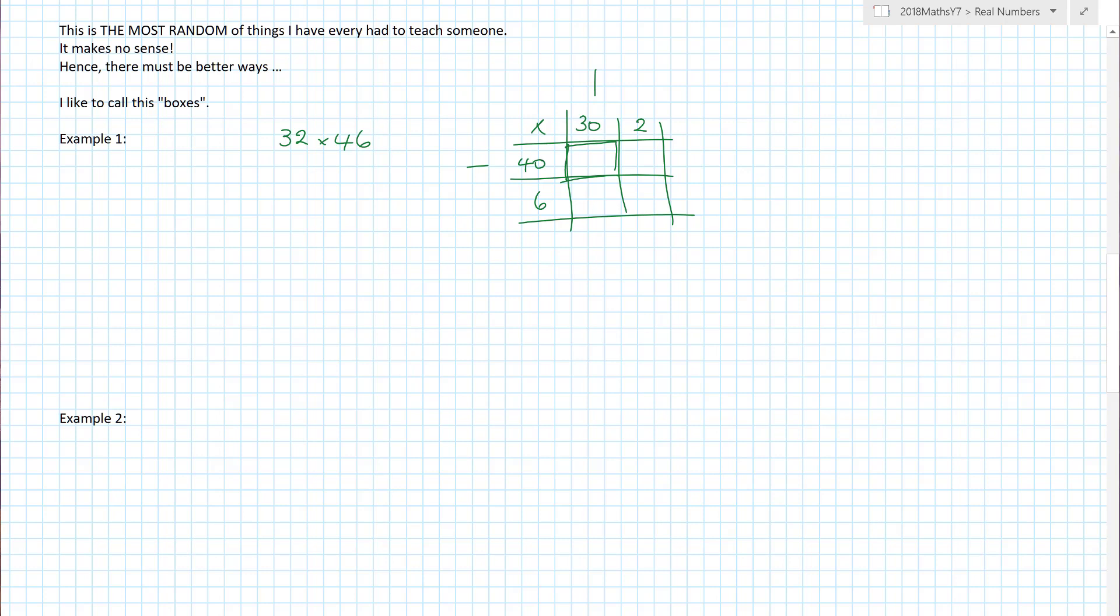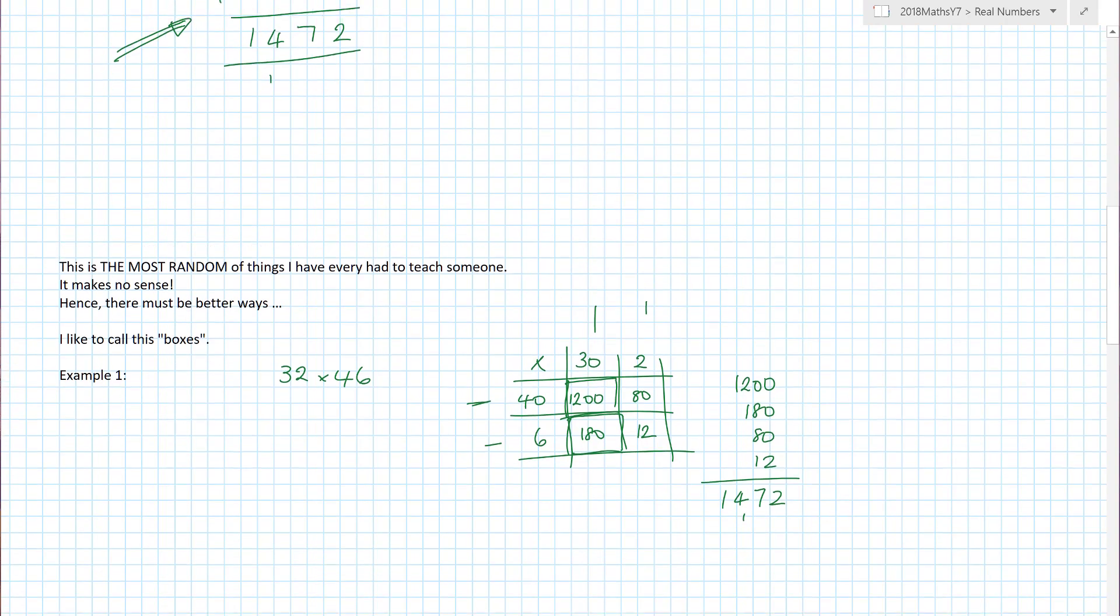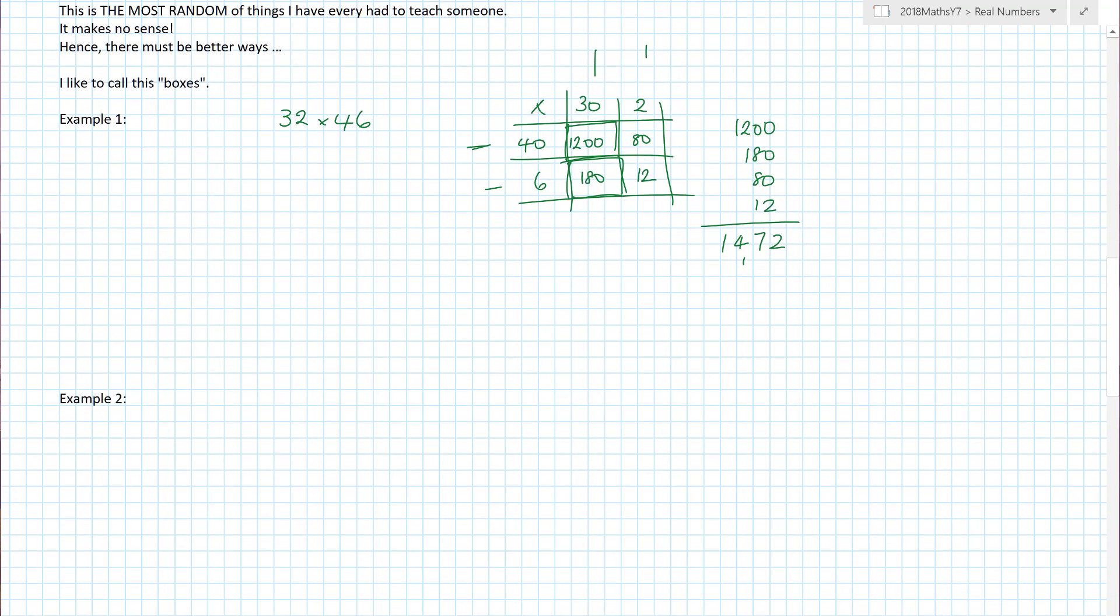So let's do 32 times 46 again. I'm going to draw a grid and I put a little times here. I know that 32 can be written as 30 and 2. That makes sense. And I know 46 is 40 and 6. Now all we need to do, and we can do most of this in our head, is everywhere we see a box, we multiply the row by the column. 30 times 40 is 1,200. This box has got 2 and 40, which is 80. I go down to this box here, and it's 6 and 30, which is 180. And 6 and 2, which is 12. And then, ladies and gentlemen, all I need to do is add those numbers together. That gives me 1,472.